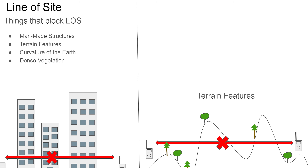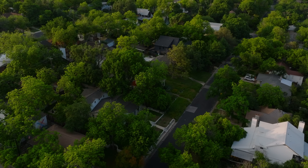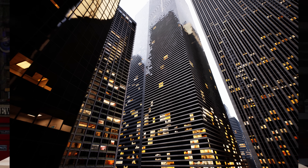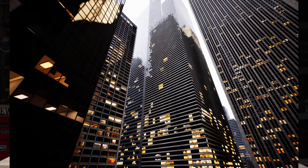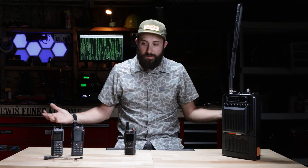There are some things that block line of sight. Things such as terrain features — we already mentioned mountains — but also trees, vehicles, and tall buildings. It's because of that fact that we use repeaters, and that repeaters have become ubiquitous within radio space.